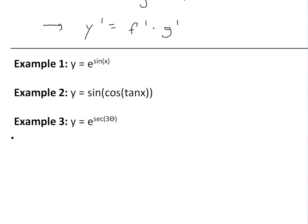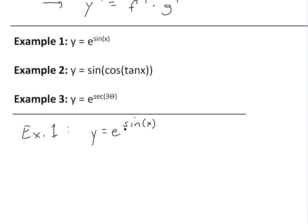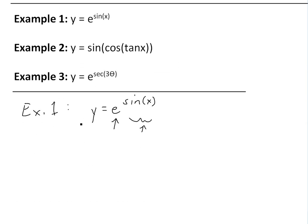Example one: y equals e to the sine x. In this case, our outer function is the e function, and our inner function is sine of x inside.